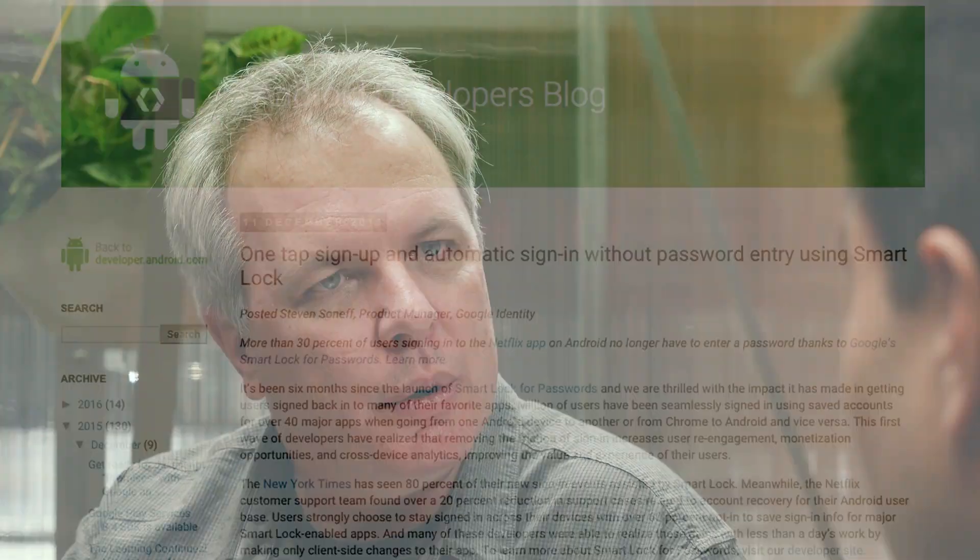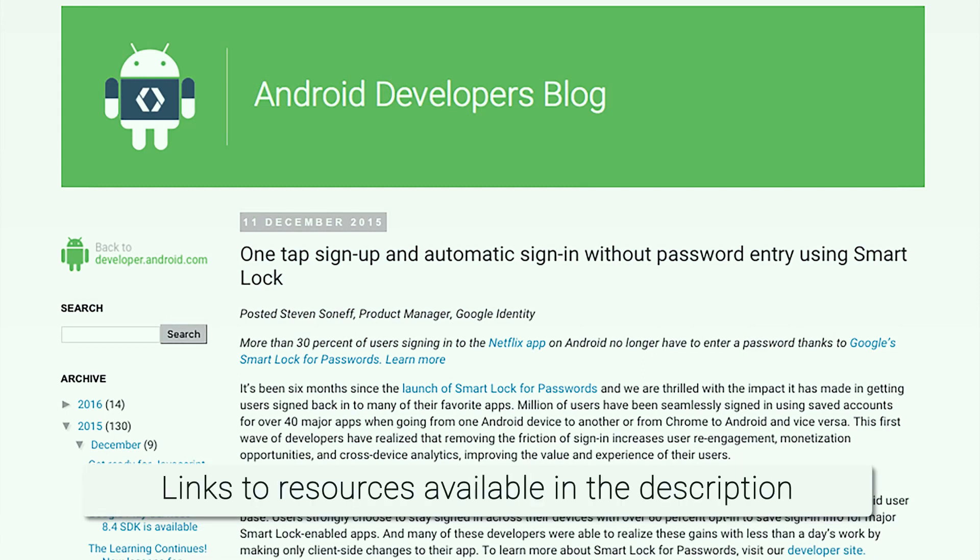I know you wrote a blog post recently about Smart Lock for Passwords. Could you tell us a little bit about what it is and what's so great about it? Sure. Smart Lock is one of our recent additions to the set of APIs we offer. It came out last year at Google I/O. Basically, it provides functionality to save and retrieve information about how people sign in to a third-party app.